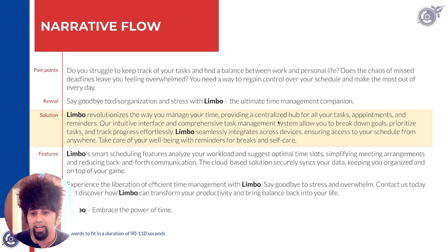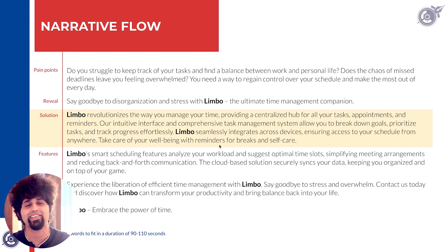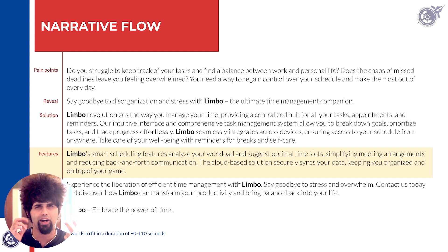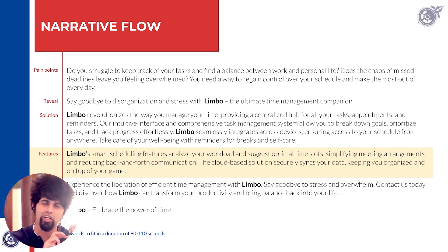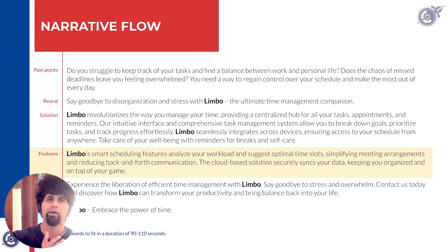Now the solution: 'Limbo revolutionizes the way you manage your time, providing a centralized hub for all your tasks, appointments, and reminders.' In this 60 to 70 word section, we talk about how exactly Limbo solves the problem. 'Take care of your well-being with reminders for breaks and self-care.' The solution and features sections — roughly 60 to 70 and 80 to 90 words respectively — can be interchanged depending on the product. Sometimes you need more story in the solution; sometimes more features to convince the audience.